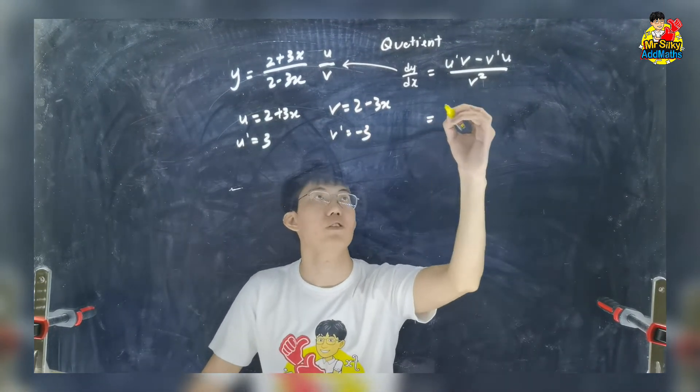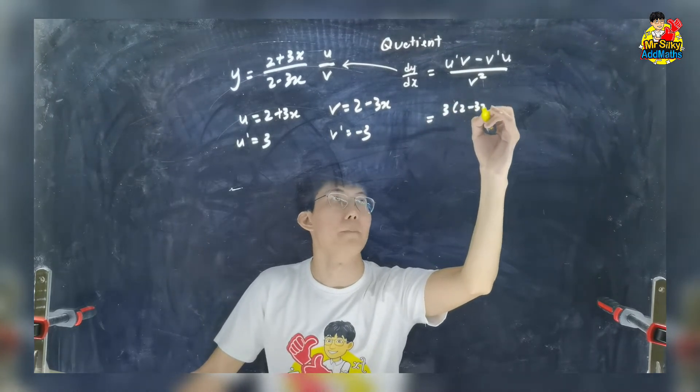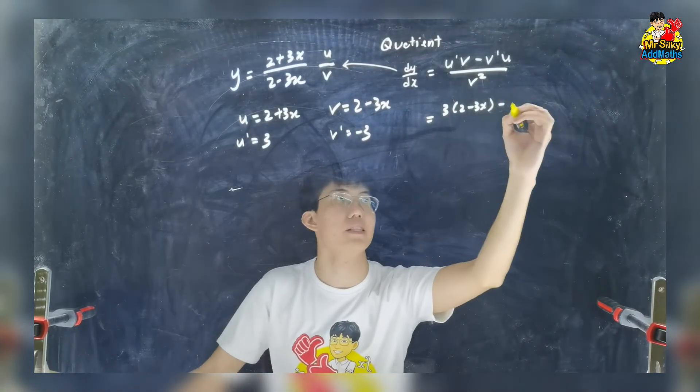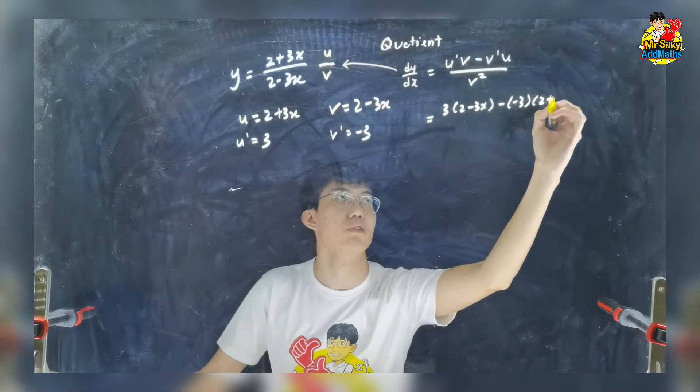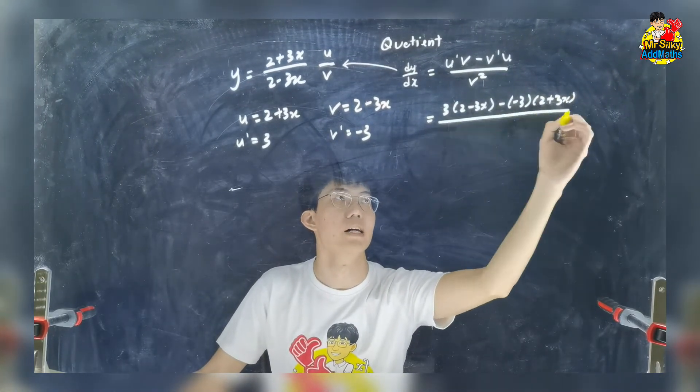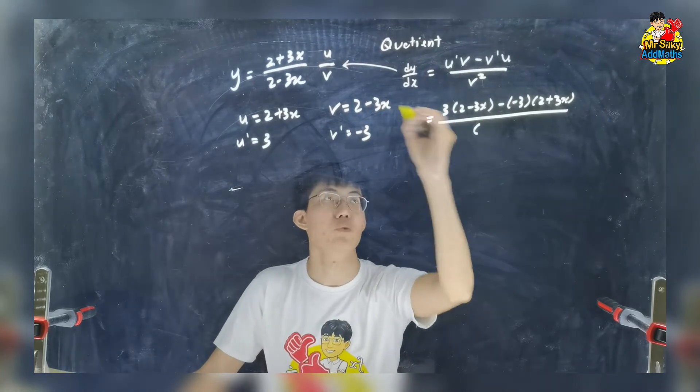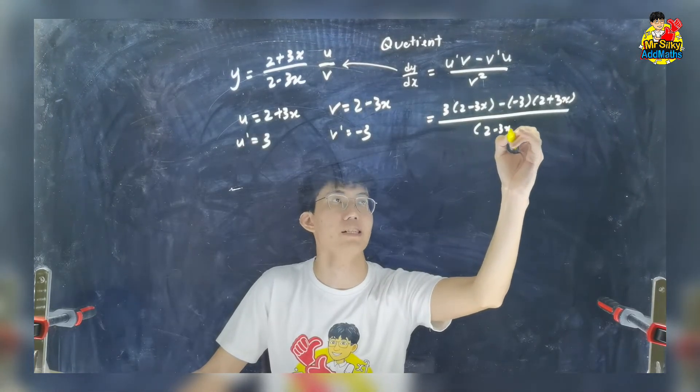What is your u prime? 3v. Write down. Minus the v prime is negative 3 and the u is 2 plus 3x over the v square. So the v is 2 minus 3x and the square.